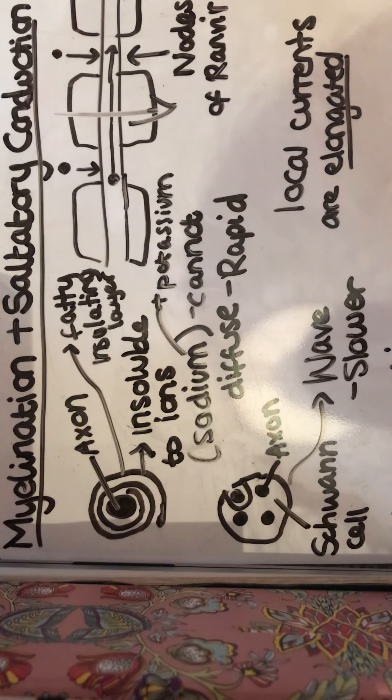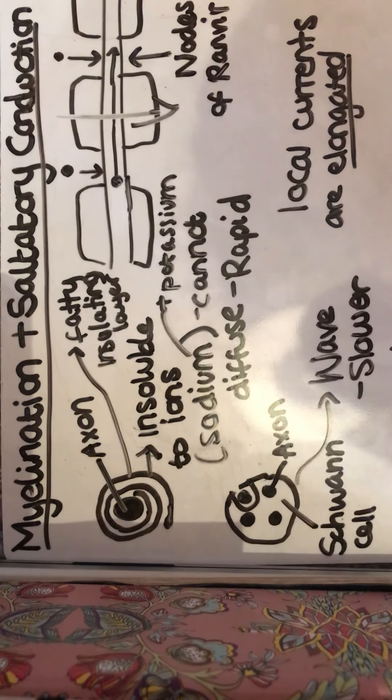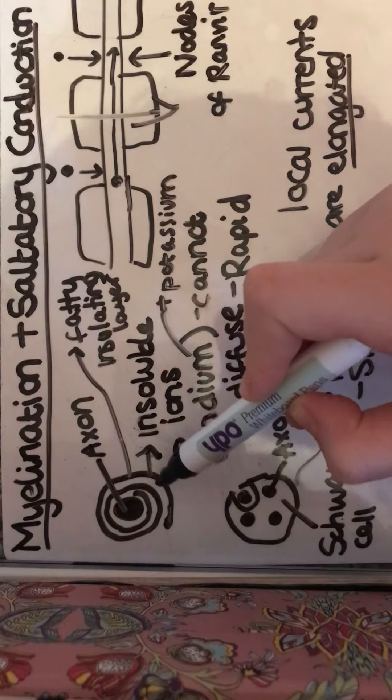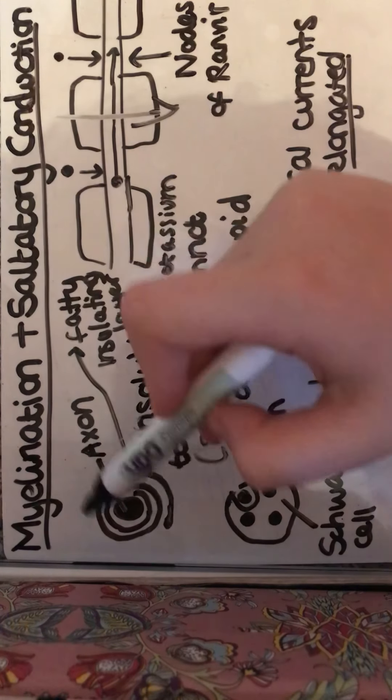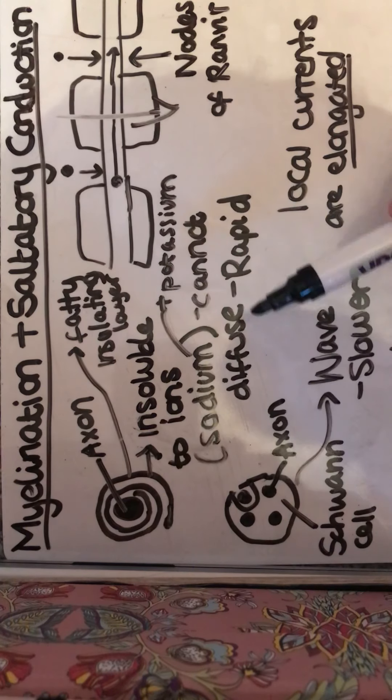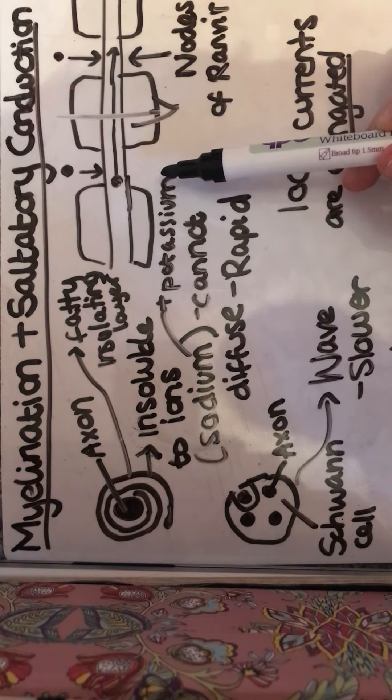And basically that's about it. So we're seeing that we've got tightly wrapped myelinating fatty insulating layer wrapped tightly around our neuron. It's insoluble to sodium potassium ions, so they can't diffuse through. It's going to have to occur at the node of Ranvier.